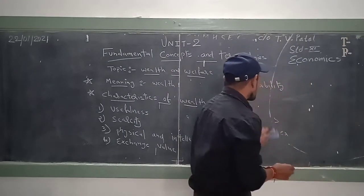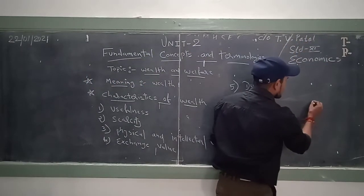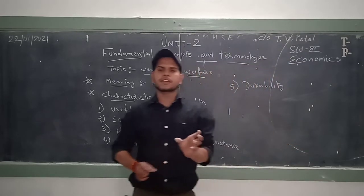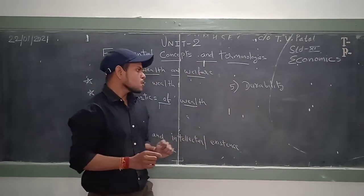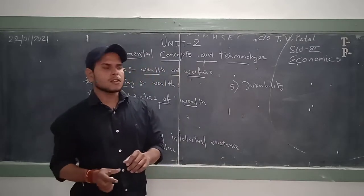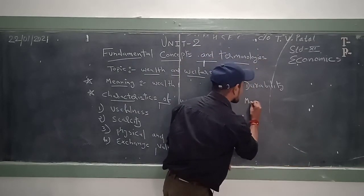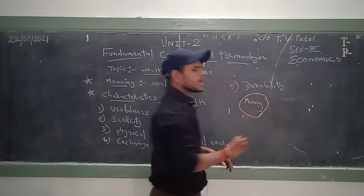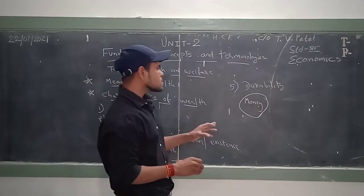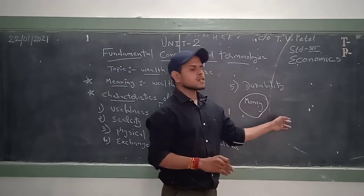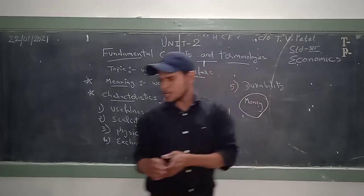There is a little difference between goods and wealth. Goods are having limited scope, and on the other hand wealth includes goods in it. In general sense we consider money as wealth, but in economics in a broad sense, wealth includes goods, services, as well as intangible things also.